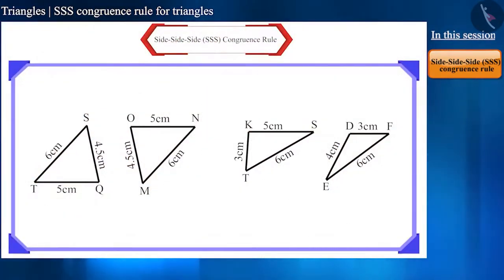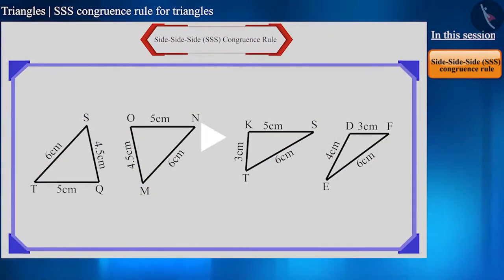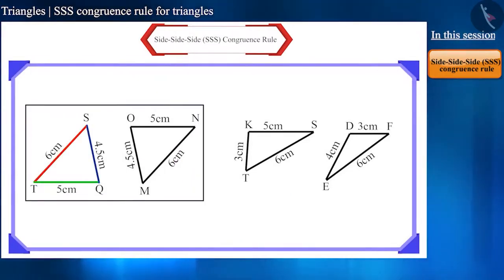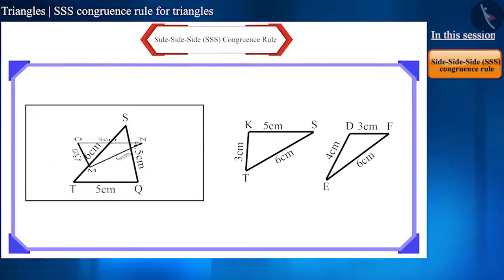Here, two pairs of triangles are given. You can pause the video and repeat the activity to test if these triangles are congruent. Observe the first pair. The three sides of the first triangle are equal to the three sides of the other triangle. That's why they are covering each other completely. Therefore, these triangles are congruent.